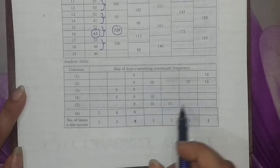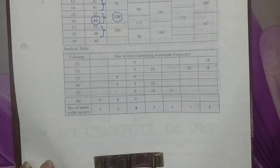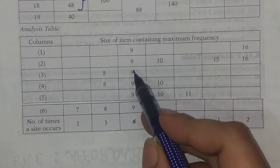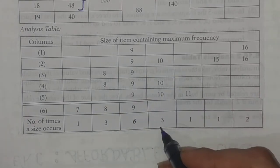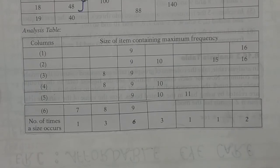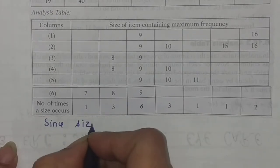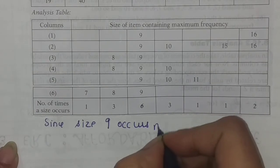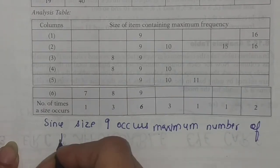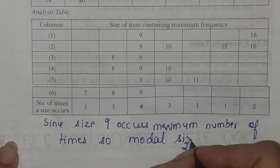This way we have allocated the frequencies. Now let's see how many times each appears: 7 occurs once, 8 occurs thrice, 9 occurs 1, 2, 3, 4, 5, 6 times - six times total, 10 occurs 3 times, 11 once, 15 once, and 16 twice. Since size 9 occurs the maximum number of times, the modal size is 9.